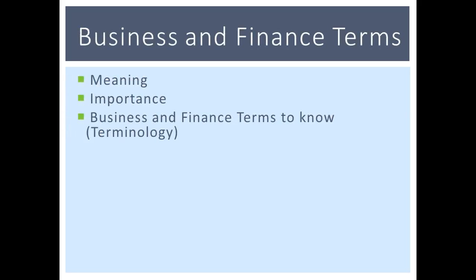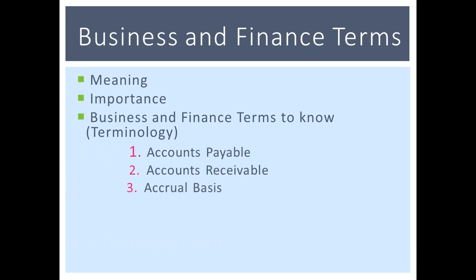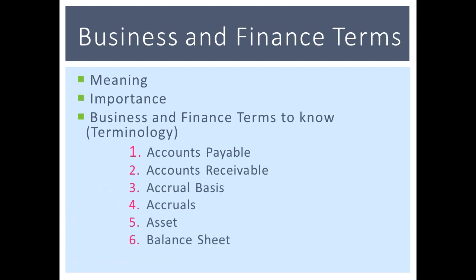There are approximately 60 business and financial terms to cover. Accounts payable is what you have to pay; accounts receivable is what you have to receive. Accrual basis means recording income when it is actually earned and expenses when actually incurred. Accruals refer to expenses such as wages and payroll taxes. Bookkeeping means entering day-to-day transactions in journals.